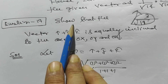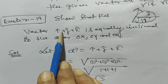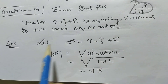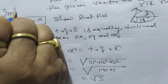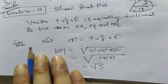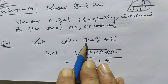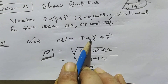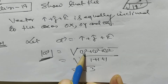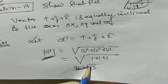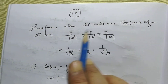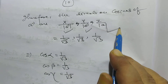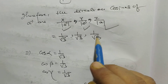Question number 14: show that the vector i-cap + j-cap + k-cap is equally inclined to the axes OX, OY, and OZ. This is a very important question for MCQ and was asked in the CBSE board examination. Let vector a = i-cap + j-cap + k-cap. The magnitude of a = √(1² + 1² + 1²) = √3. Therefore, the direction cosines of vector a are x/|a|, y/|a|, z/|a| = 1/√3, 1/√3, 1/√3. So cos α = cos β = cos γ = 1/√3, which proves the vector is equally inclined to all three axes.